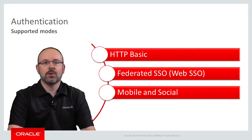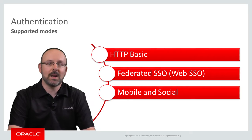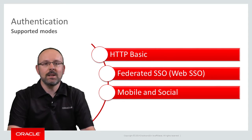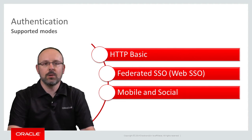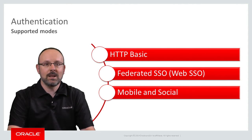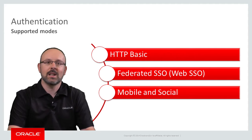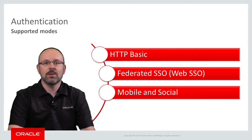Mobile and Social refers to Oracle Access Manager Mobile and Social, OAMMS, a member of the identity management product family. OAMMS has advanced features such as support for several types of security tokens and the capacity to integrate with Internet-based identity providers such as Facebook, Google, Twitter, LinkedIn, and Yahoo.